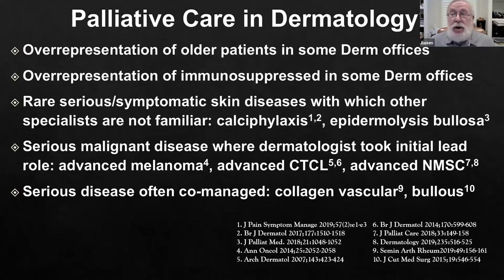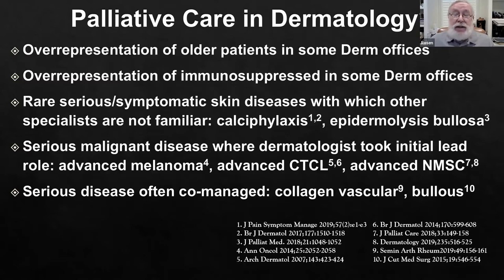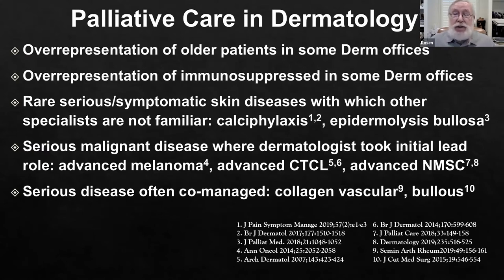In some dermatology offices, there are lots of older patients. Many of my patients have grown old with me, so they need palliative care. In some offices, there's a lot of immunosuppressed patients, collagen vascular disease, and others — they may have complications which lead to symptoms requiring palliative care. For rare, serious, and symptomatic skin diseases like calciphylaxis or epidermolysis bullosa, do you think the primary care doctor can offer palliation when they know nothing about the disease and its natural history? We're the experts in these rare, serious, symptomatic diseases. We should be the ones giving palliative care.